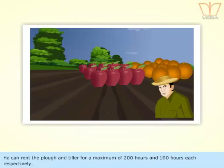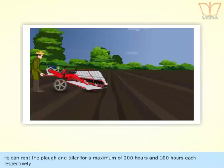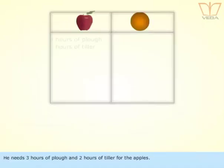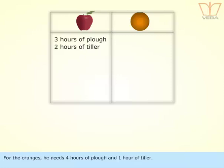He can rent the plough and tiller for a maximum of 200 hours and 100 hours each respectively. He needs 3 hours of plough and 2 hours of tiller for the apples. For the oranges, he needs 4 hours of plough and 1 hour of tiller.